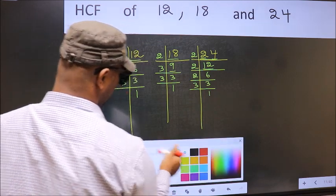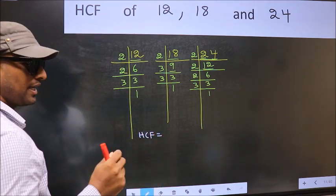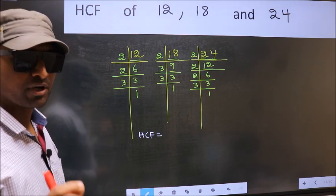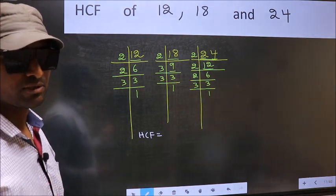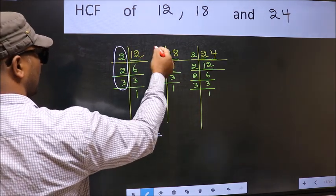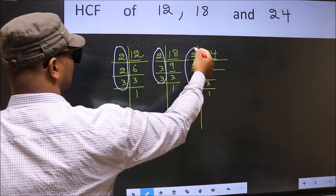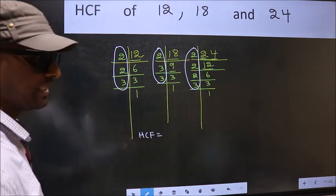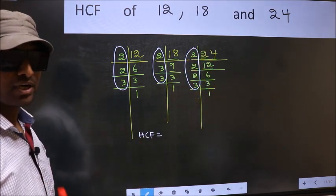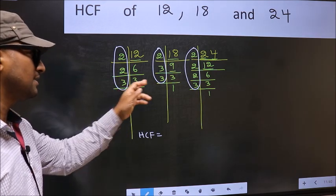So our HCF is... HCF is the product of numbers which should be present over here and here and also here. I repeat, HCF is the product of numbers which should be present in these 3 places.